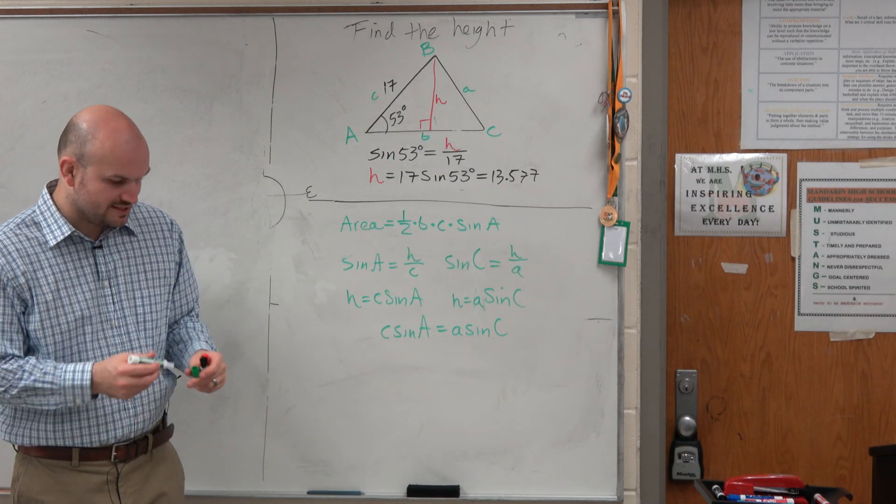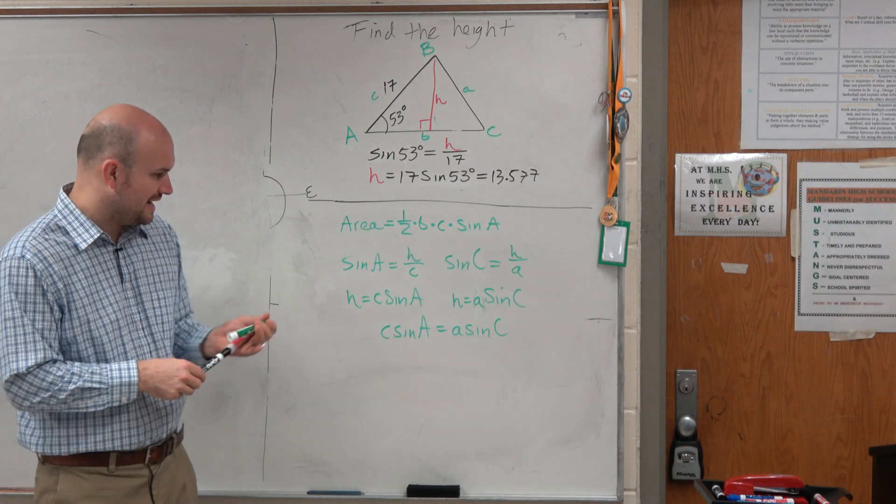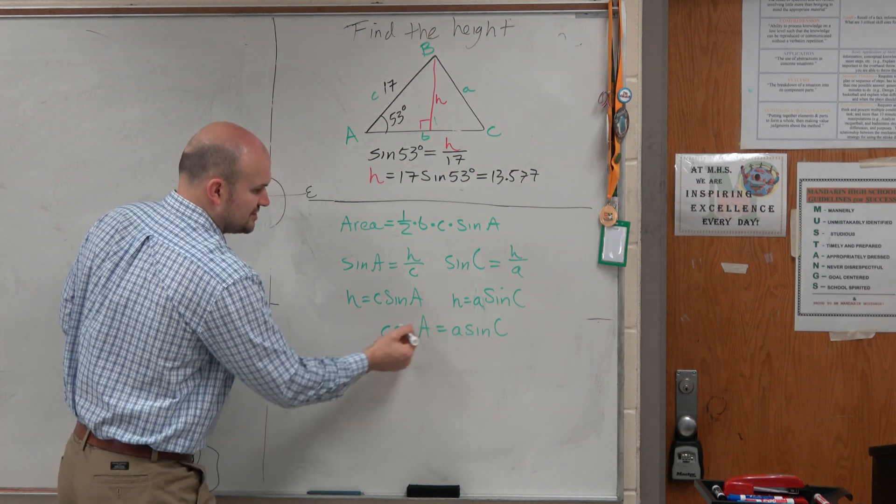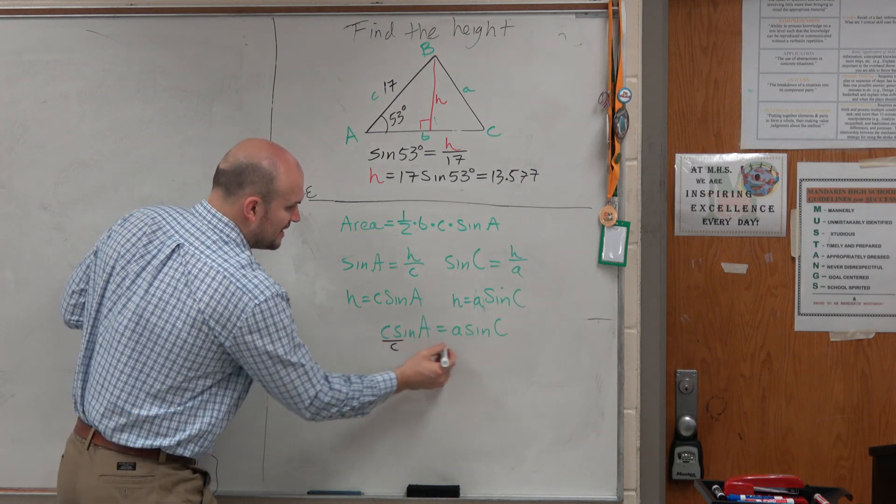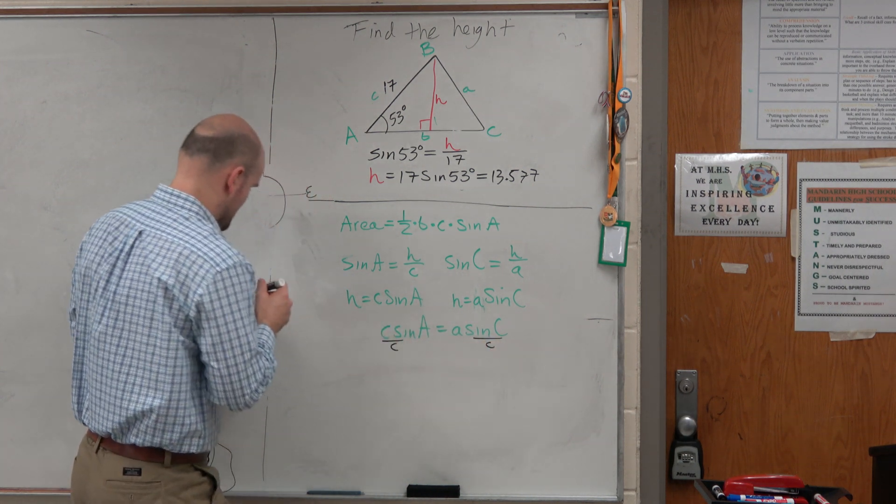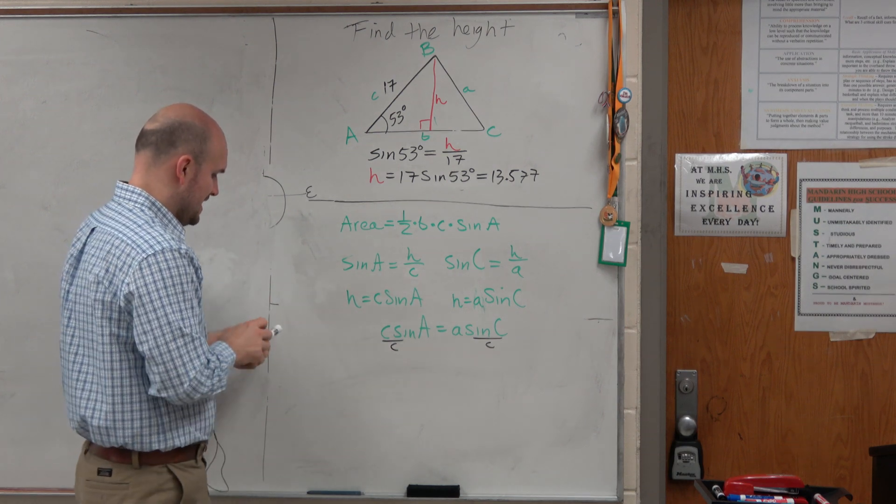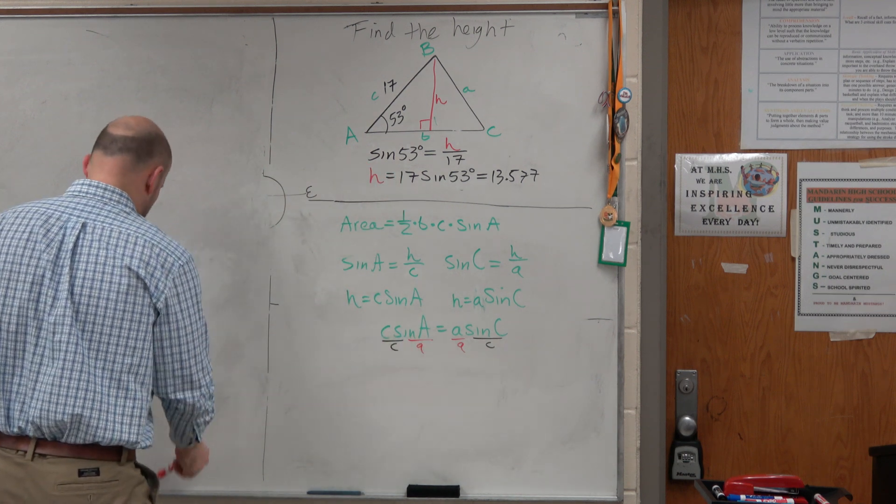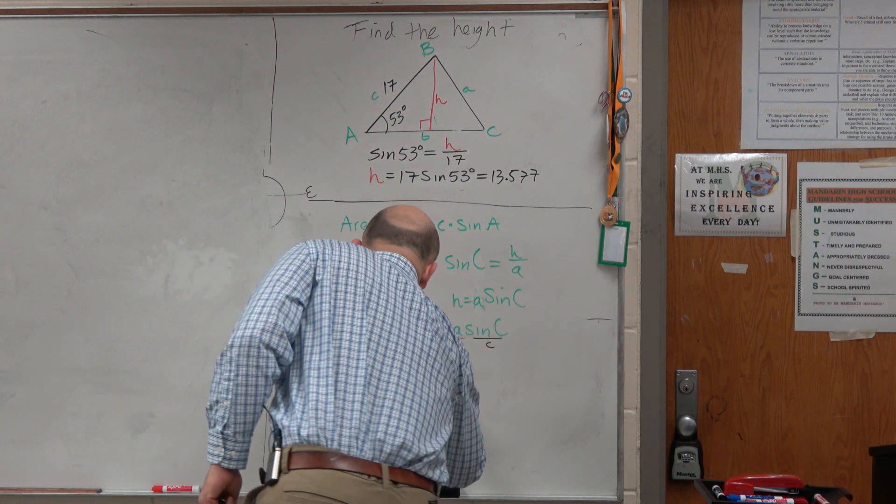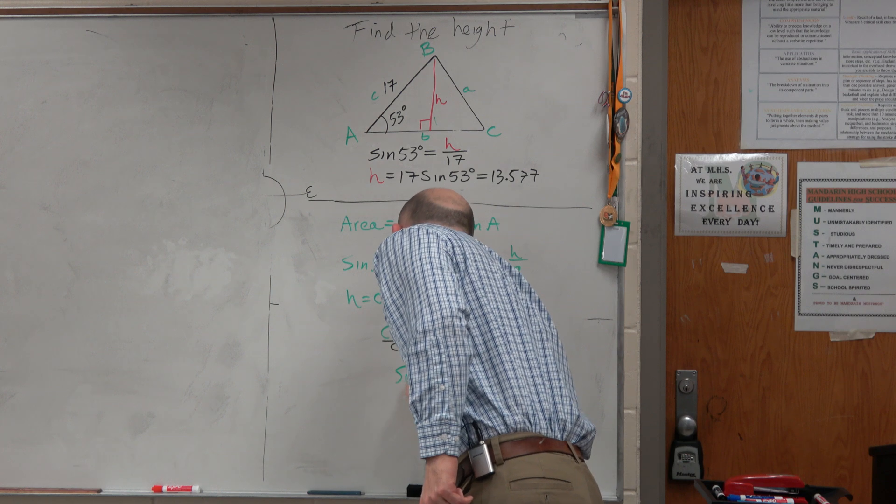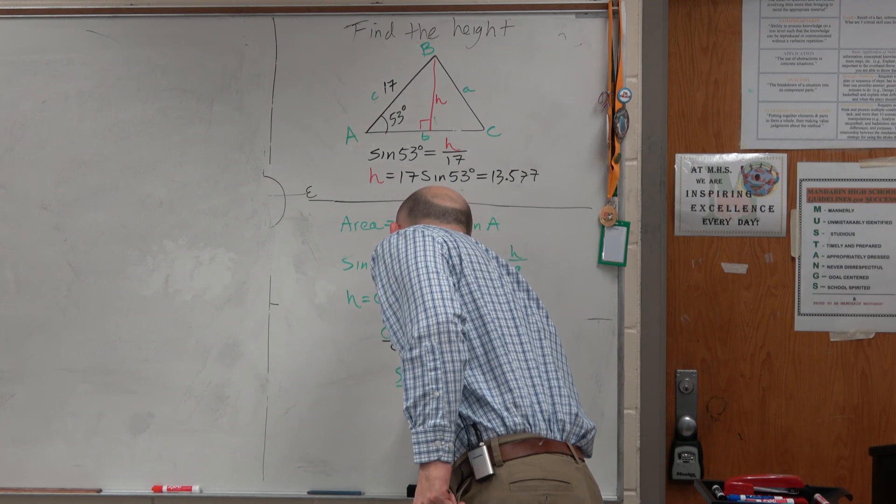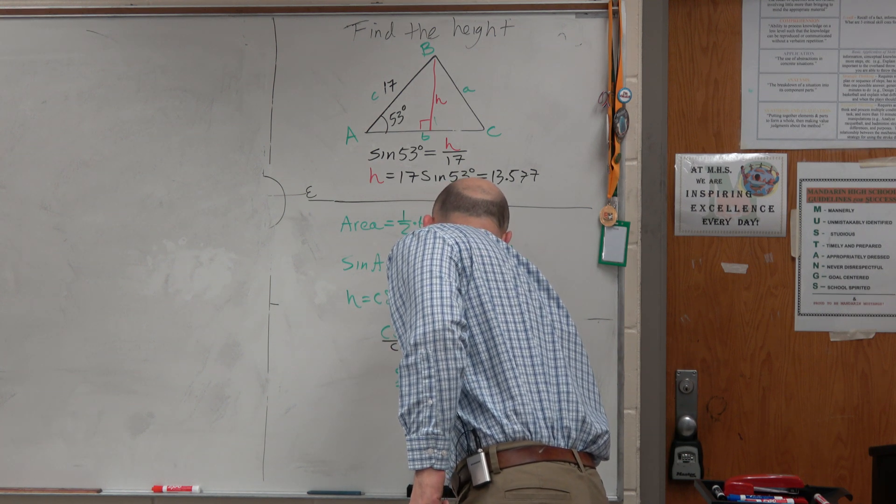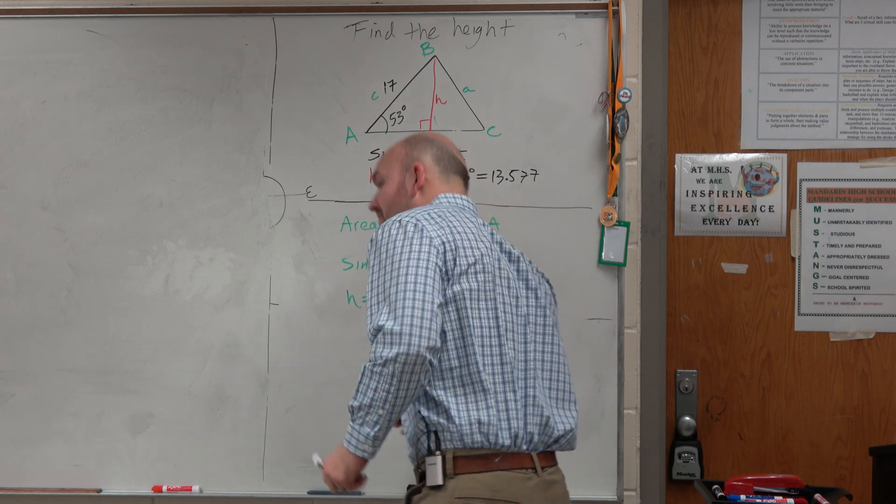And then, if I wanted to get the sines equal to each other, I could divide by a C on both sides and divide by an A on both sides. And when I do that, I get the sine of A over lowercase a equals the sine of C over lowercase c.